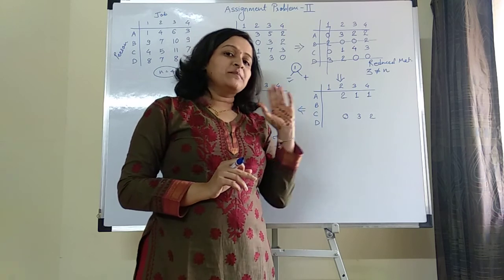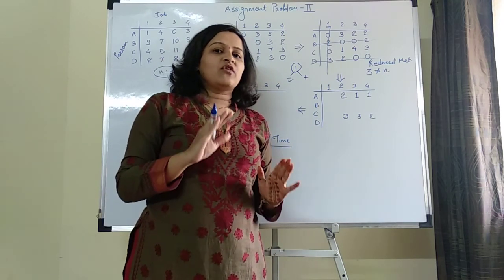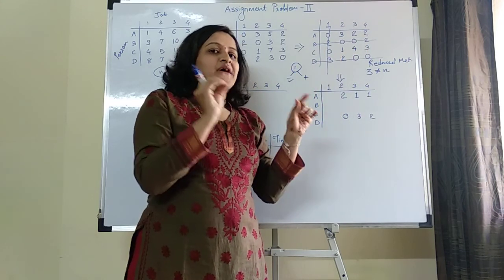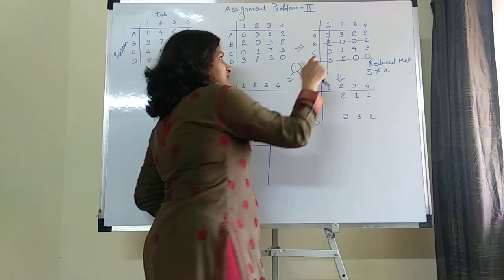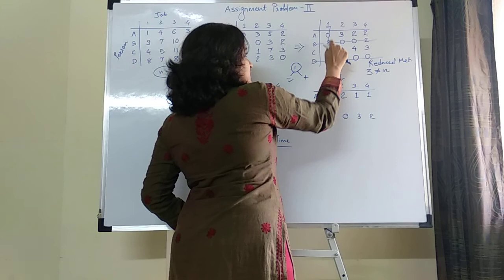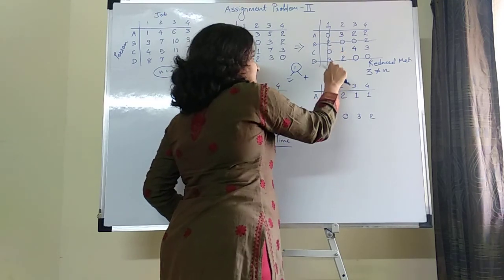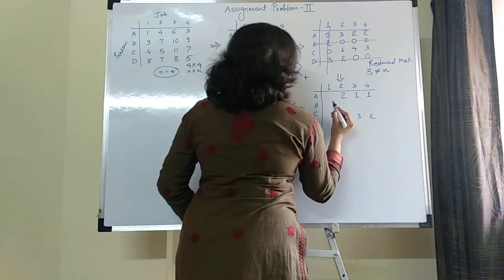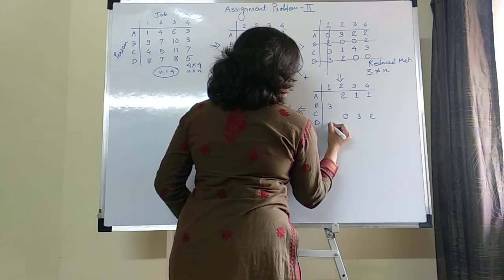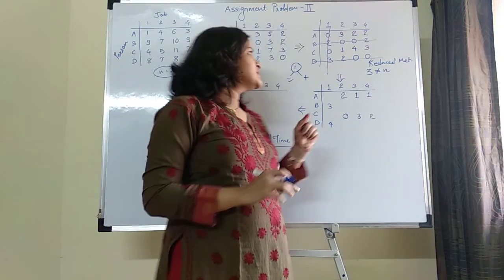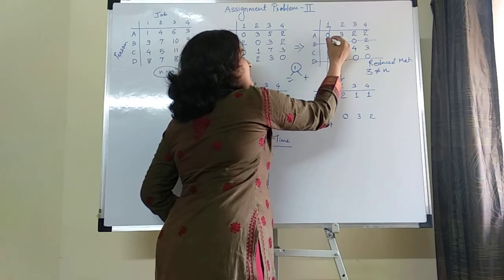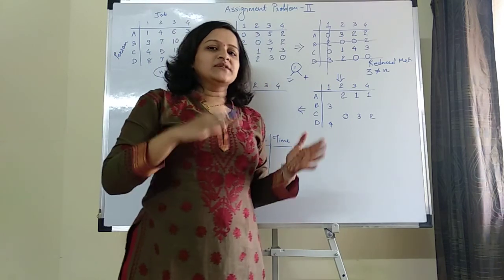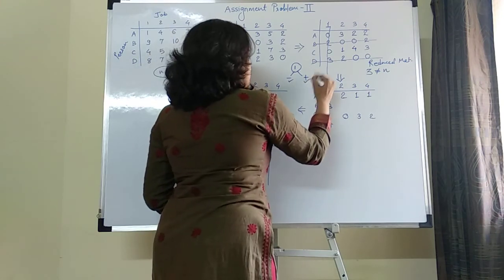Now for the plus operation: wherever you see the intersection of a vertical and horizontal line — forming a plus sign — you perform addition. There are two such intersections in this matrix. At those two positions: 2+1=3, and 3+1=4. A small trick to remember: wherever you see a plus sign formed by crossing lines, perform the plus operation. This will help reduce confusion in the exam.